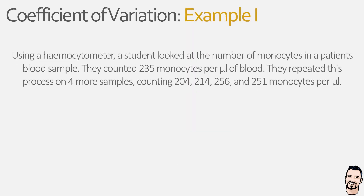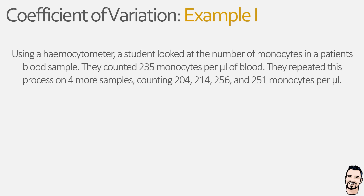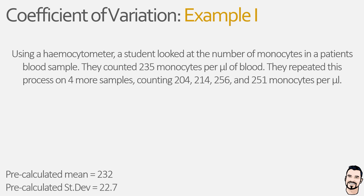In our first example, we have a student who is counting the number of monocytes in a patient's blood sample using a microscope and haemocytometer. During the first count they note 235 monocytes per microliter of blood. To try and increase the accuracy of their data they perform repeat counts on different blood samples from the same patient, noting 204, 214, 256, and 251 monocytes per microliter. Following this experimental counting, the student calculated the mean to be 232 and the sample standard deviation to be 22.7.